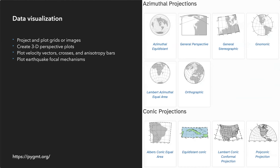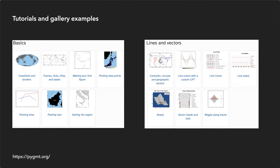PyGMT's visualization methods support over 30 map projections, with its documentation including a gallery demonstrating the syntax for each projection. In addition, PyGMT's documentation includes tutorials for new and experienced users and gallery examples demonstrating how to accomplish specific tasks.